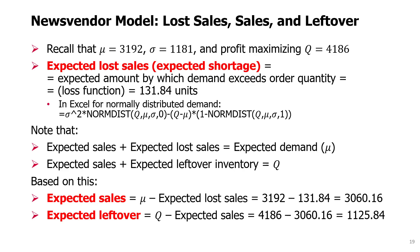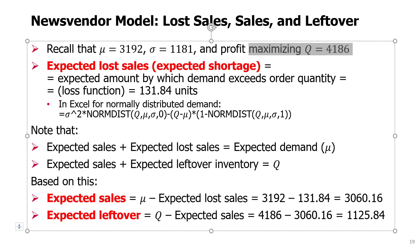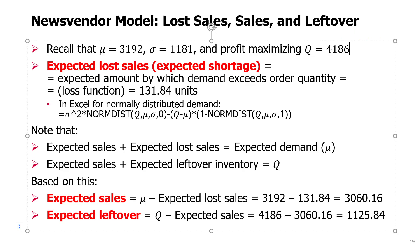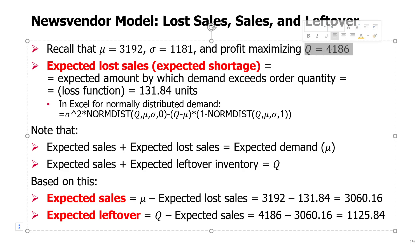Expected lost sales is an average value of lost sales. The actual lost sales might be equal to zero whenever demand is less than or equal to the quantity — we don't have any lost sales. Because we chose this quantity such that the probability of being in stock is 80%, or probability of demand being this or less is 80%, actual lost sales will be zero with probability 80%. But with the remaining 20%, the lost sales may be positive.